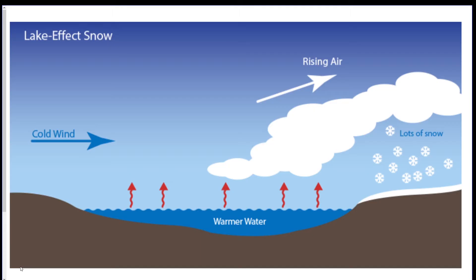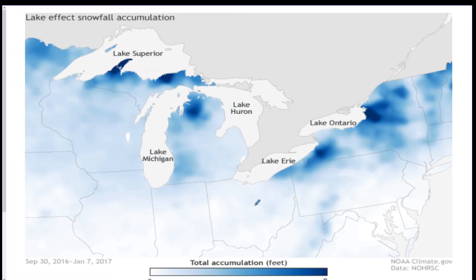The first thing I want to discuss is lake effect snow. Generally you get cold air moving over a body of warm water. As the cold air moves over the warm water, the warm water causes the air to carry more moisture because it heats up the bottom of it. The moisture then goes into the cold air, so the cold dry air picks up the moisture crossing the lake, then drops a ton of snow on the other side.